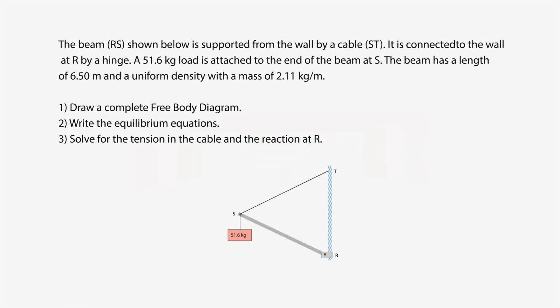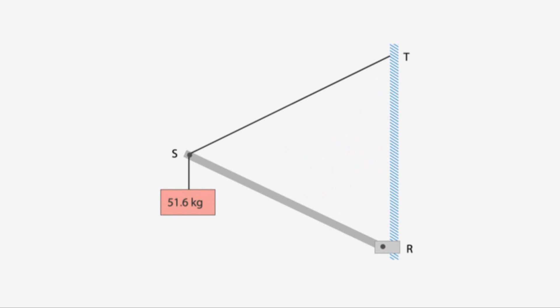Let's look at the diagram first of all. We have a diagram showing a beam that's in equilibrium. This beam here has a length of 6.5 meters. The cable supporting it goes from point S up to the wall at point T and also is 6.5 meters.